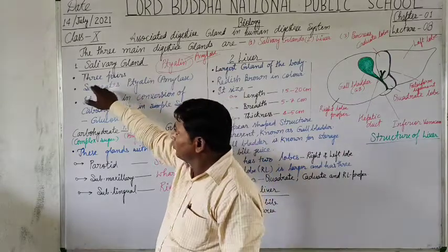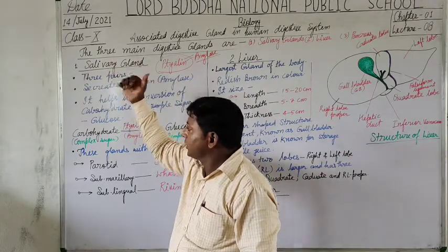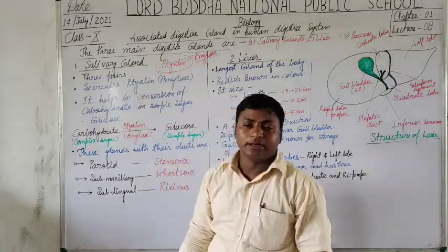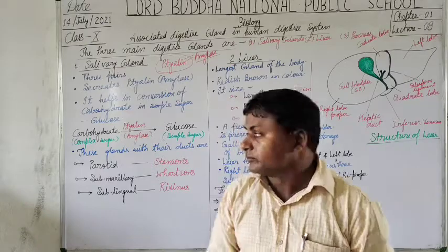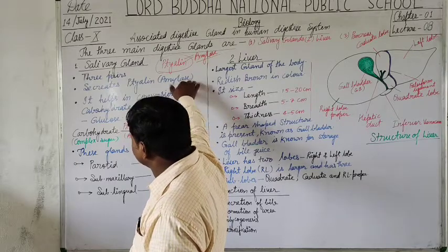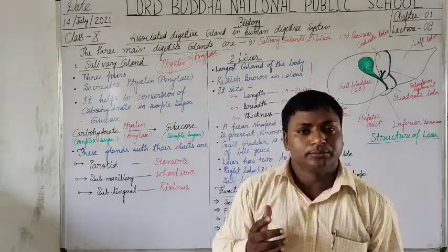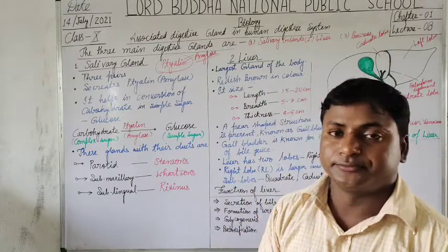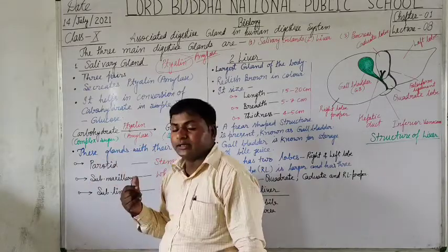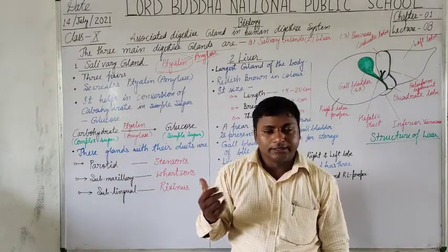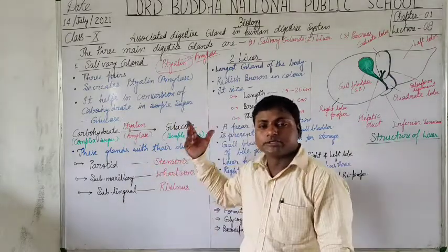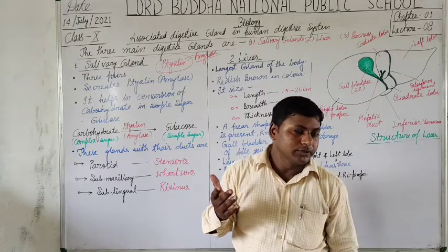So what we learn here about the salivary glands: there are three pairs of salivary glands which secrete ptyalin or amylase. What is the function of ptyalin amylase? Students, the main function of ptyalin amylase is the conversion of complex sugar into simple sugar.